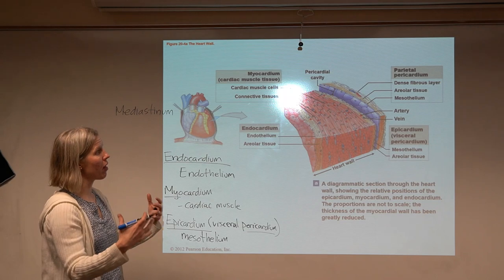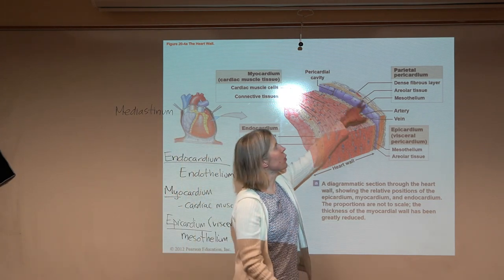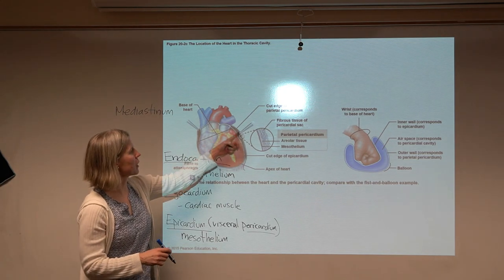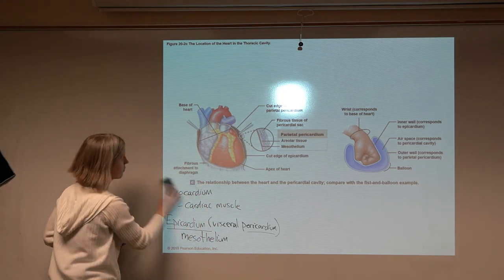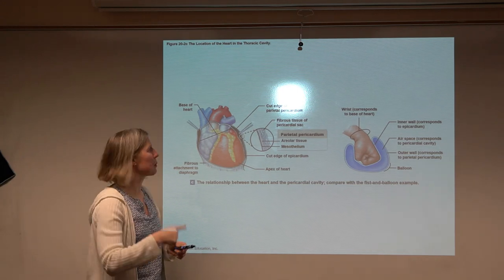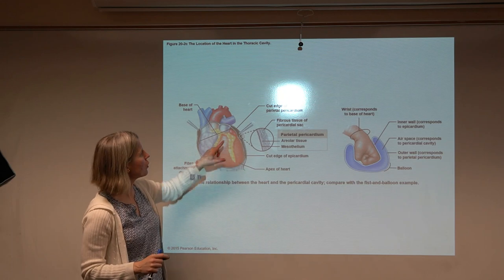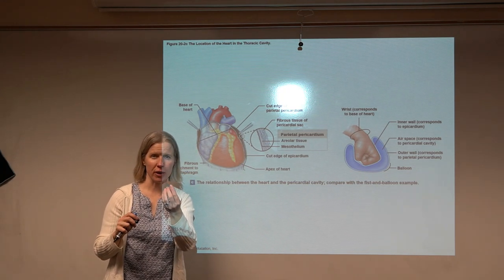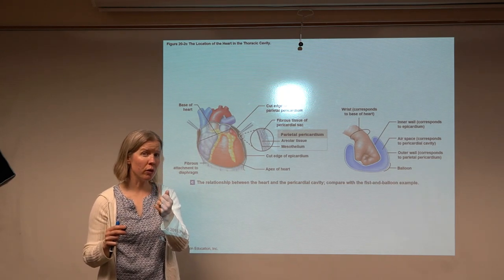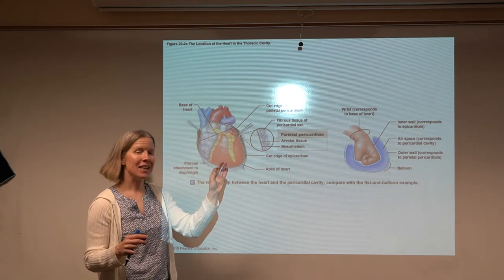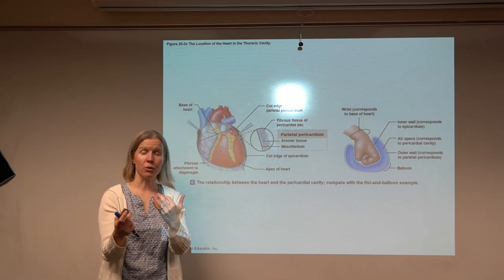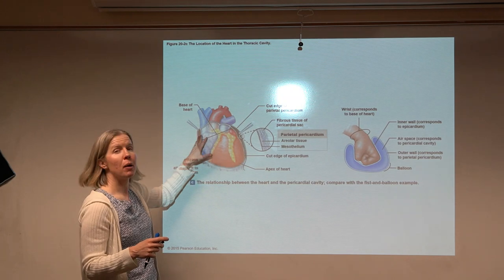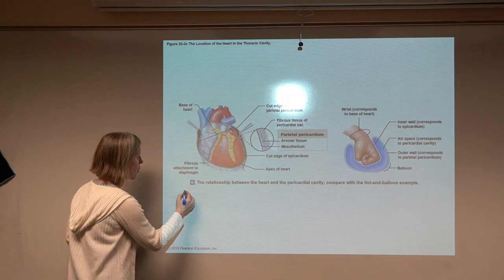The pericardium is the sac that the heart sits in. It has multiple layers, which makes the language a bit more complicated. The layers of the pericardium secrete a serous fluid containing some glycolipids, making it smooth. The function of the pericardium is to provide this slippery substance between the heart and surrounding organs — because the heart beats about 100,000 times a day, you don't want it rubbing against a rib or the sternum. So the heart sits in this pericardial sac, which decreases friction.